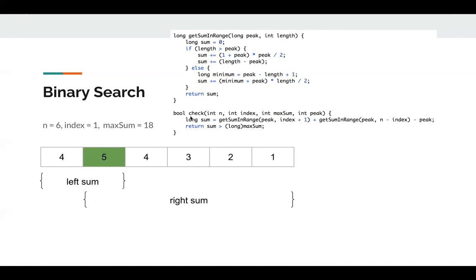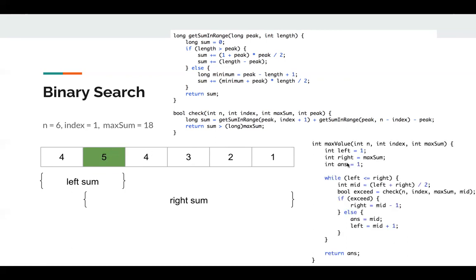Using this helper function I can check if I can assign the peak value or not, then I use binary search. I initialize left to 1 and right to maximum sum. While left is less than or equal to right, I get a middle value and test it. If it does not exceed the maximum sum, then the middle value is acceptable, so I assign it to my answer and set left to mid plus 1. Otherwise, if it exceeds maximum sum, it's not acceptable, so I search the left half: right becomes mid minus 1.